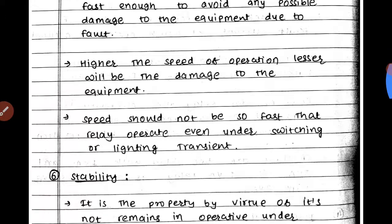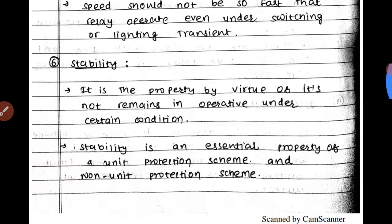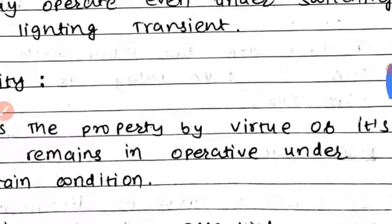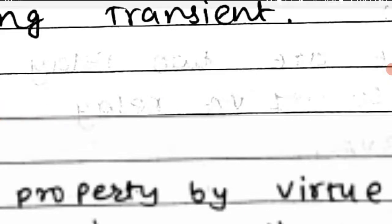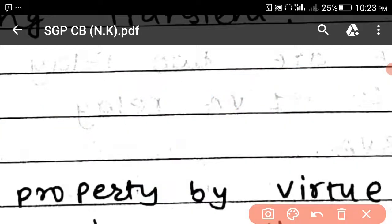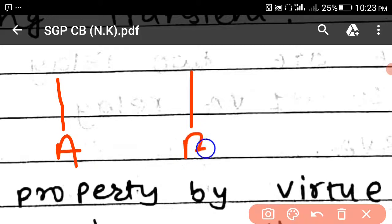The sixth requirement is stability. Stability is the property by virtue of which the relay remains inoperative under certain conditions. For example, consider two parts of a transmission line — the relay for one part should operate only within its assigned zone and not be confused about whether it should operate for a fault in another part.